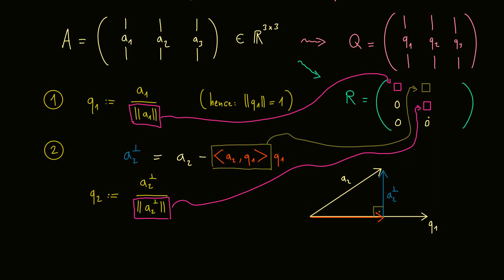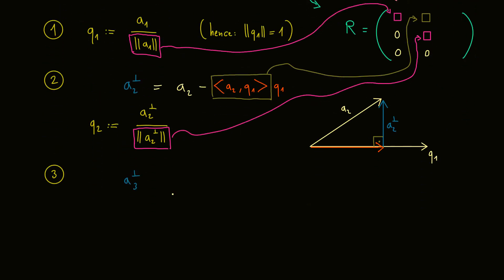Okay, and now we are ready to deal with the last step, the last column in this example. Now we want to calculate something that I call A3 perpendicular, which means we calculate orthogonal projections and subtract them from A3. So the first part would be calculating the projection of A3 into the Q1 direction, which looks the same as before in this picture. But then we also have to consider the direction into Q2. So we also calculate this one and subtract it.